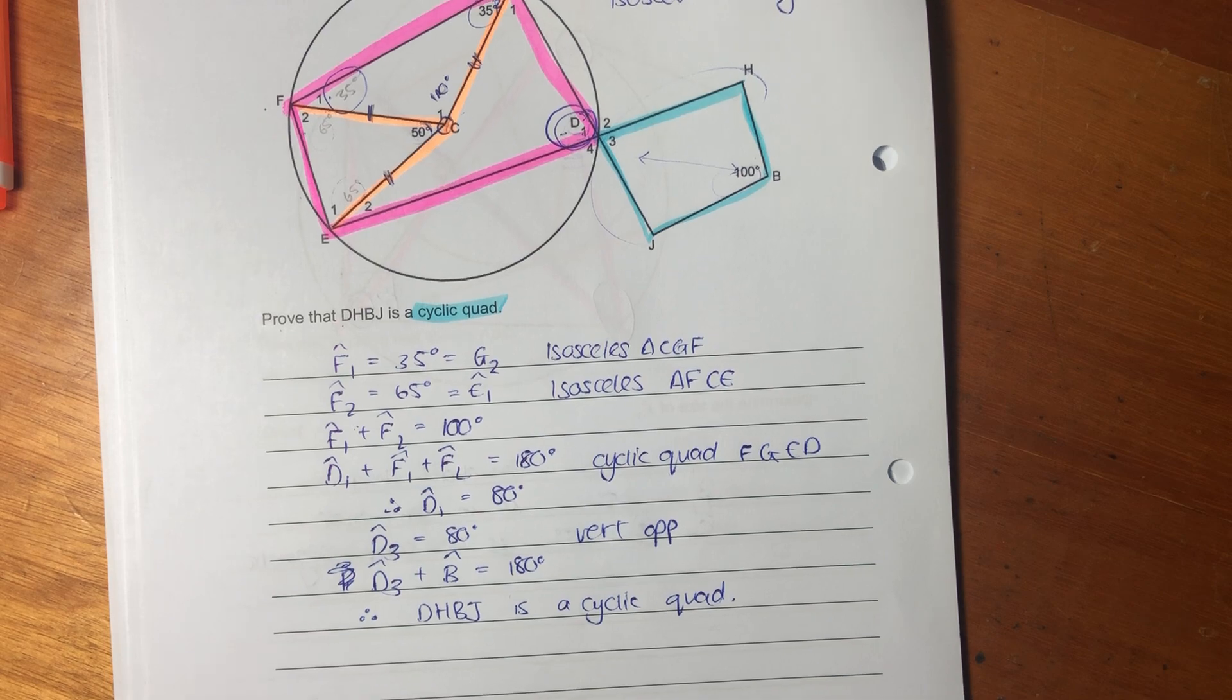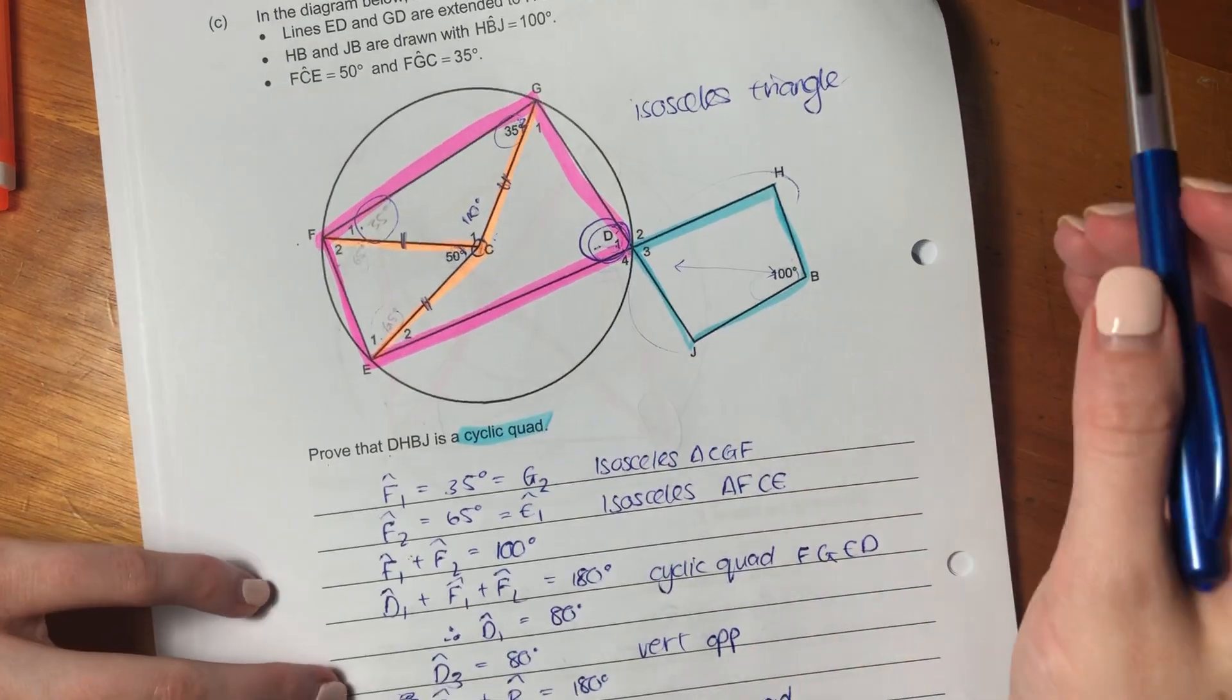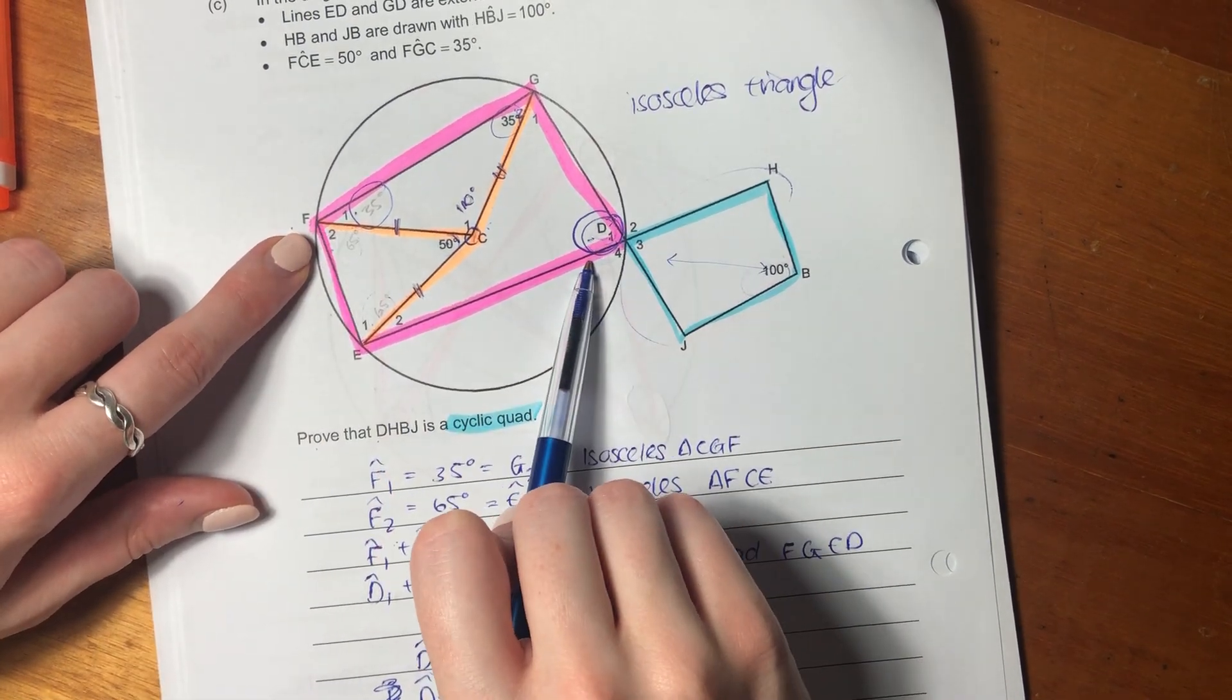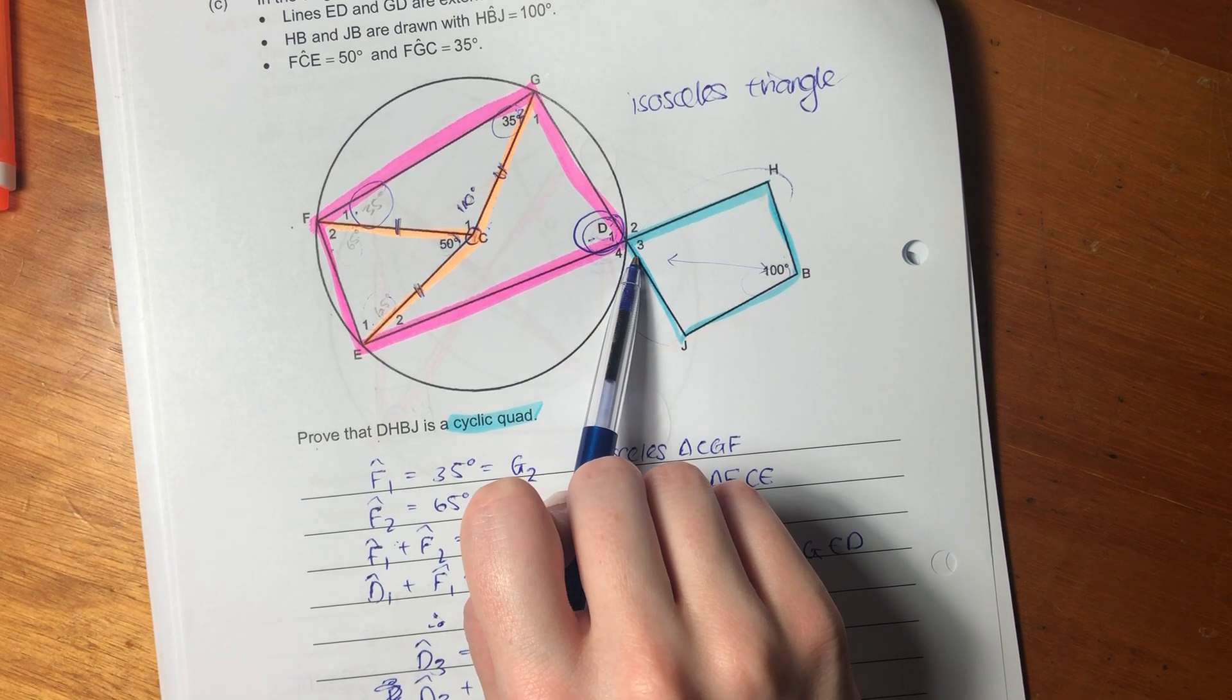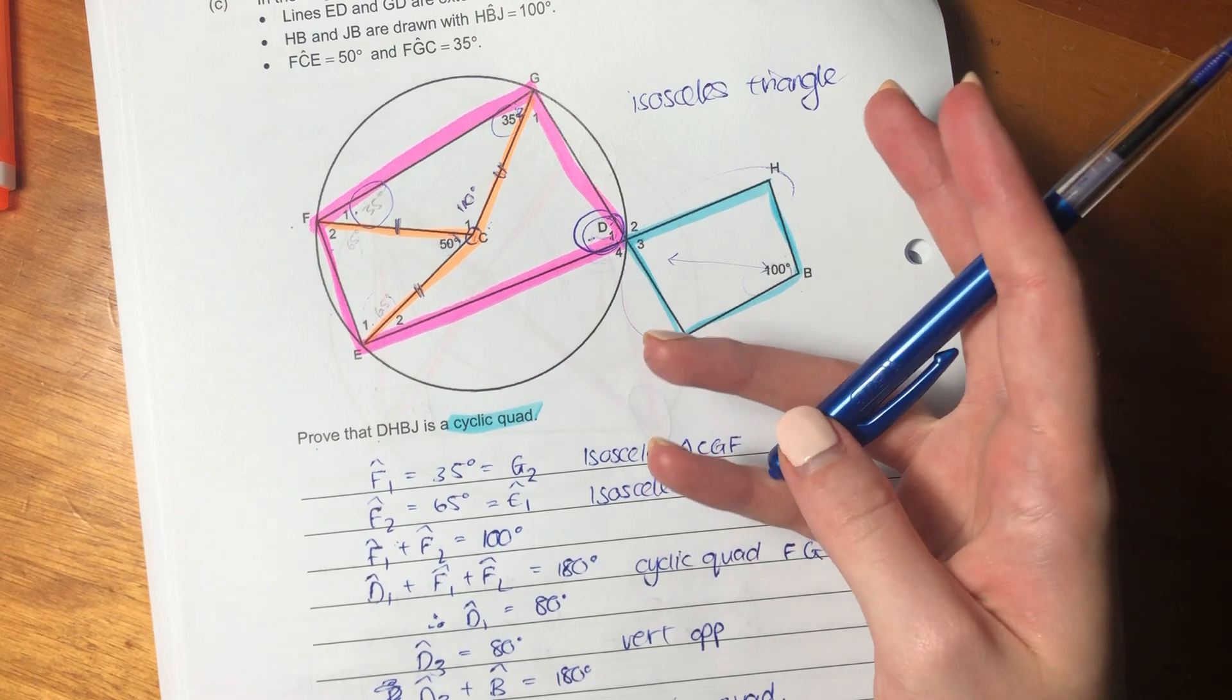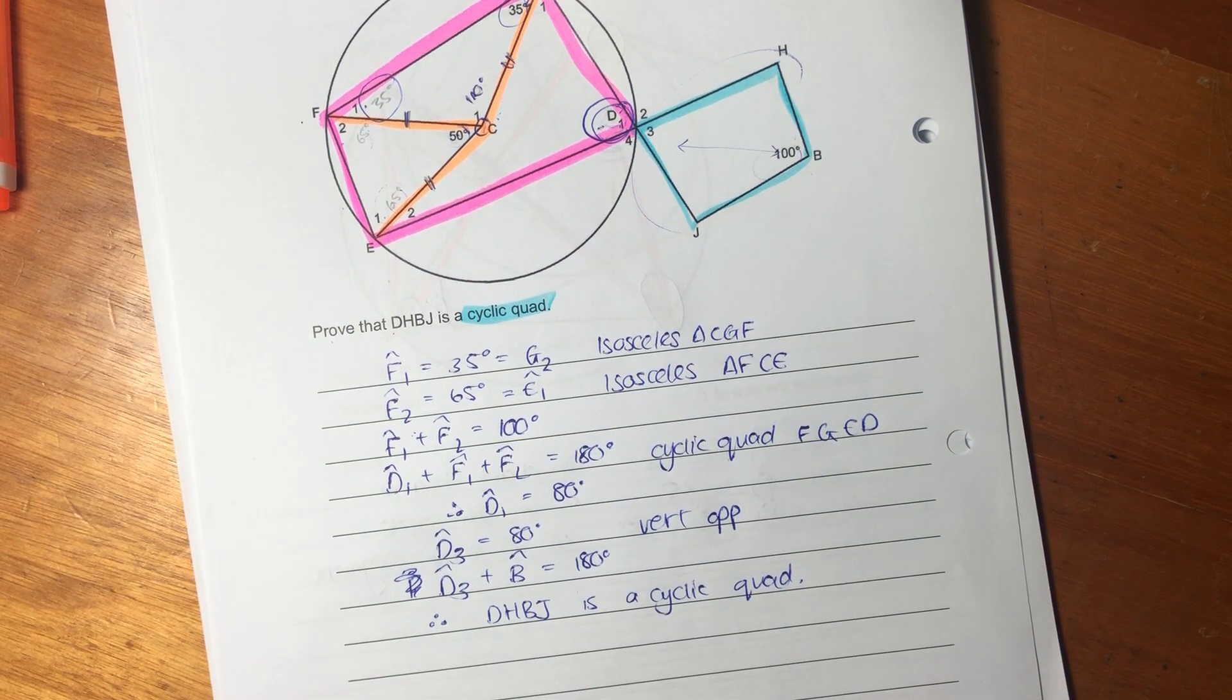What I said is I'm just going to use what I am understanding from this drawing. I'm saying there's two isosceles triangles. There's that one, and there's this one. It means that those two angles are equal, and those two angles are equal. Now, I said that's 35, that's 65. Add those together equals 100. If that's 100, D1 has to equal 80 because together those have to equal 180 because it's a cyclic quad. I have D1 equaling 80, therefore, D3 equals 80. And because D3 equals 80 and B equals 100, together those equal 180, therefore, it is a cyclic quad. And what you can say there is you can say opposite angles of a cyclic quad are supplementary. I hope that was helpful.